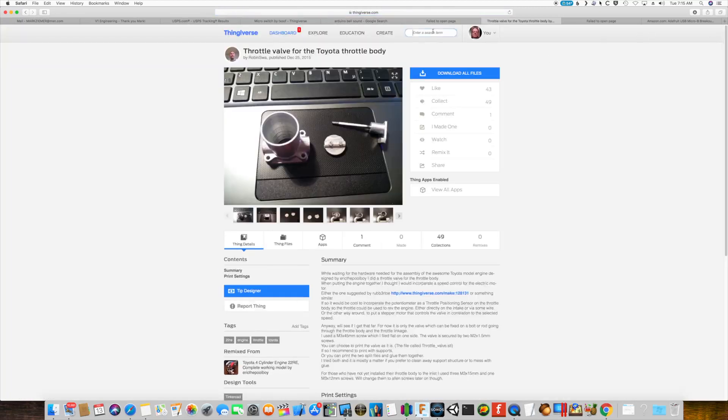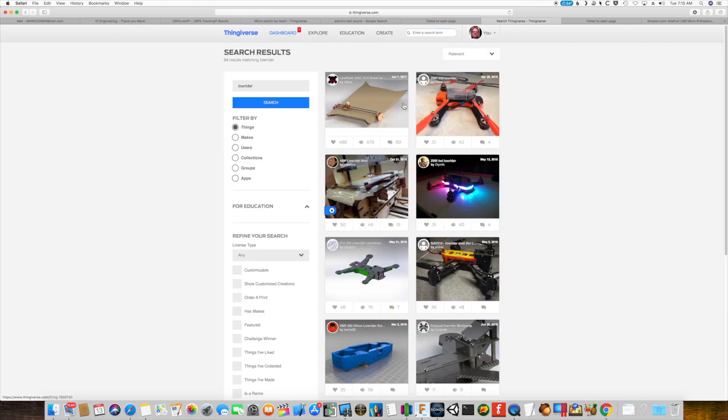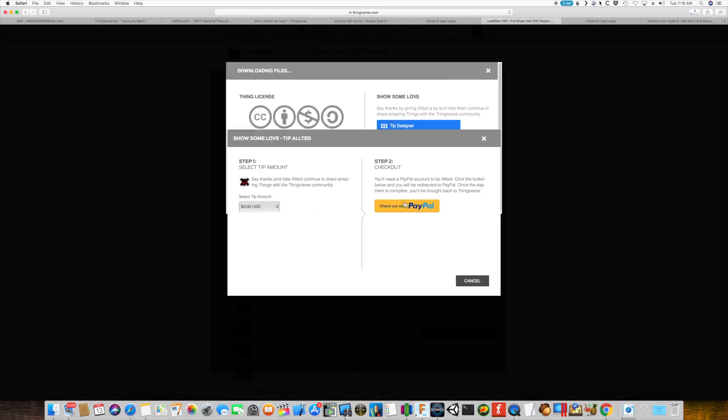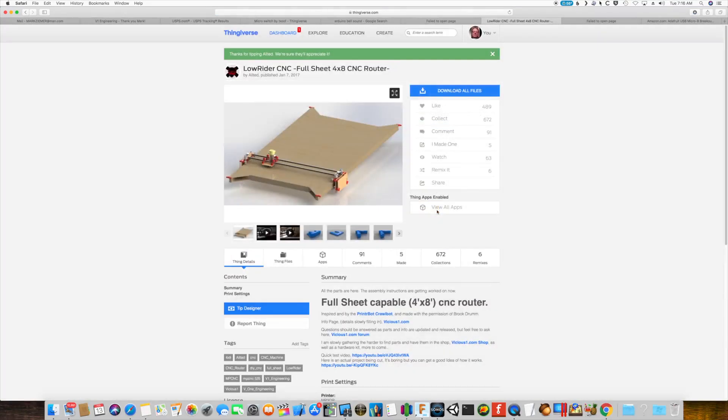So the first thing we're going to do is go to lowrider on Thingiverse. There we go, there it is. So let's go ahead and download all those files. Let's go ahead and tip the designer just because it's an amazing thing that he's making for us, and I'm going to go ahead and check out with PayPal here. All right, now that we're back.